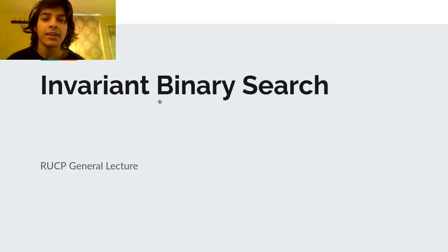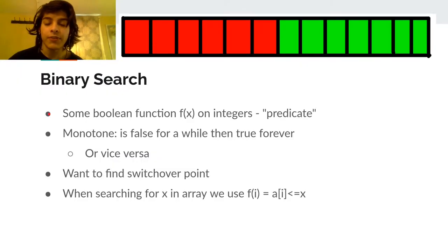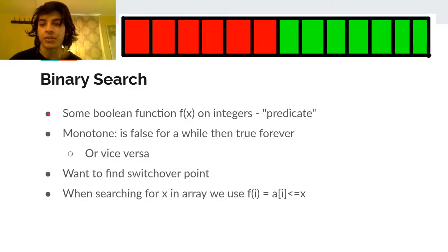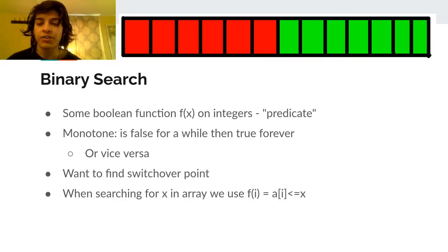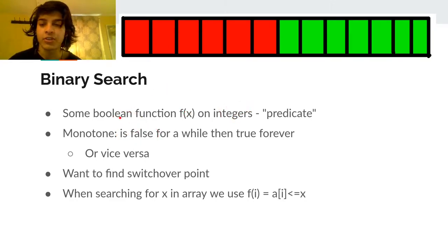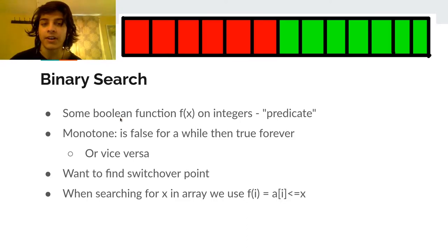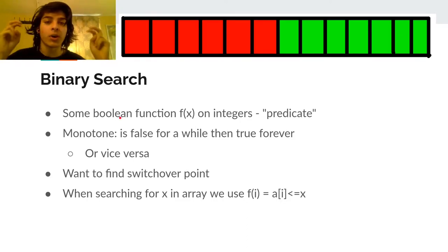In my opinion, it's very intuitive to understand. First I want to formalize what the goal of binary search is. We have some function f of x that maps from the integers to Booleans — from integers to true or false. This is known as the predicate function. Informally, we often call it the 'works' function.